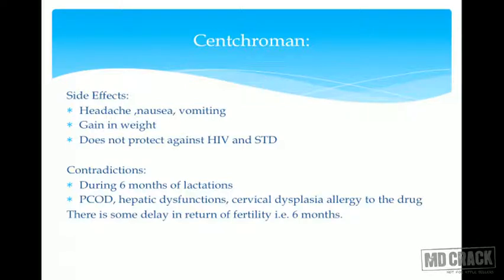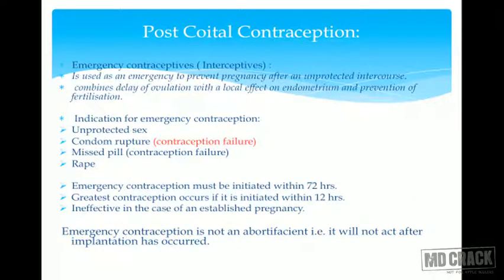Side effects of centchroman include headache, nausea, vomiting, and weight gain. It does not protect against HIV and STDs. Contraindications include six months of lactation, PCOD, hepatic dysfunction, cervical dysplasia, and allergy to the drug. There is a delay in return of fertility of about six months after use.